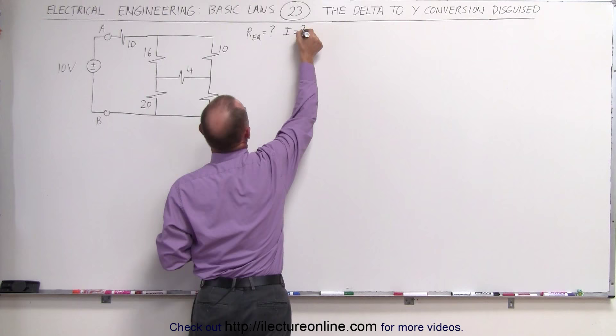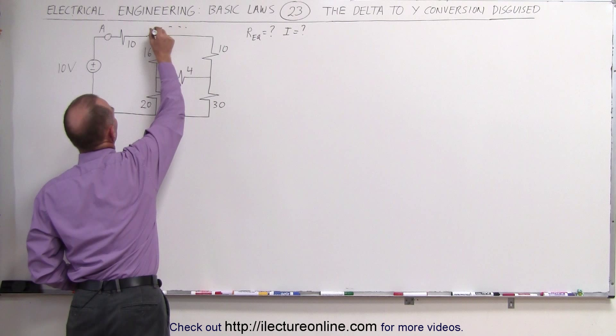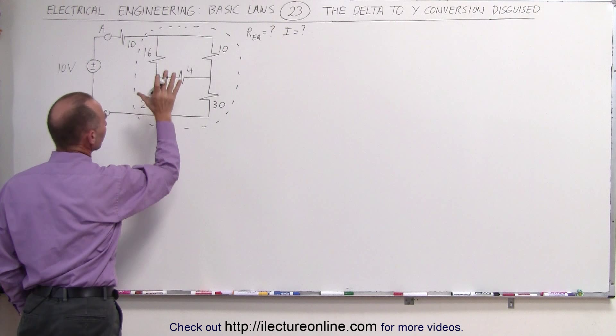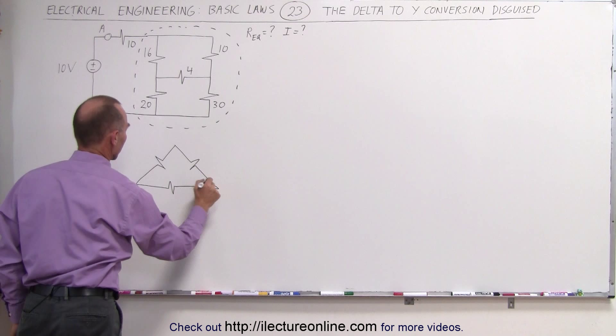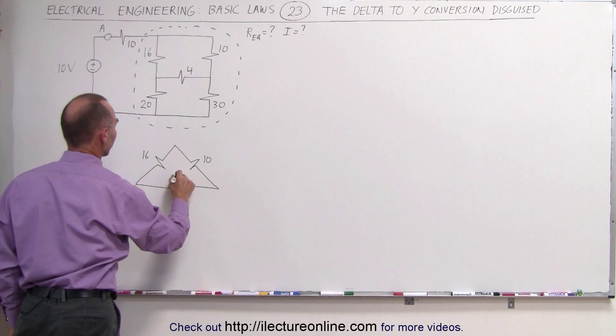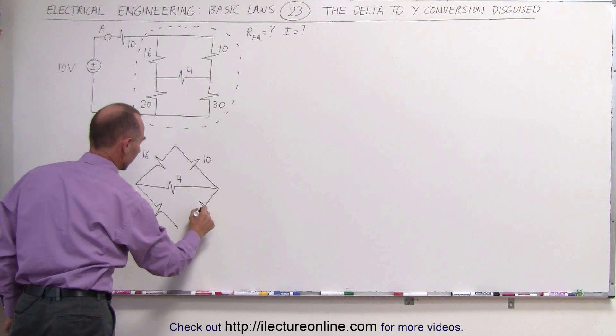If we redraw this portion of the circuit, let me do that over here. So I'm going to redraw this circuit and make it look like this. Here, this is the 16-ohm resistor. This here is the 10-ohm resistor. And this here is the 4-ohm resistor. And then the 20 and the 30-ohm resistor. Here's the 20-ohm, and here's the 30-ohm. Now you recognize this as a bridge circuit.